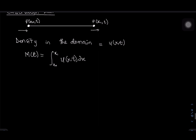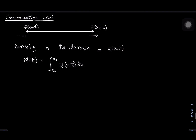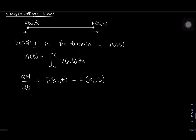One thing we also have to know is that the change in mass with respect to time is equal to the amount flowing into the domain minus the amount flowing outside of the domain. So the rate of change in mass is just going to be f(x₀, t) minus f(x₁, t). Let me call the mass integral the first equation and this the second equation.